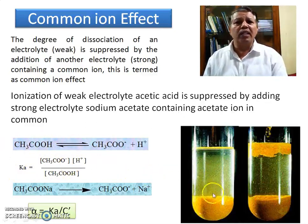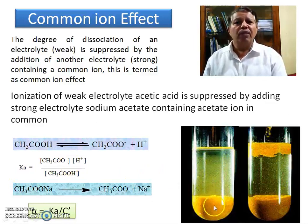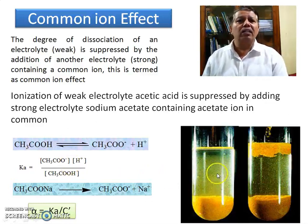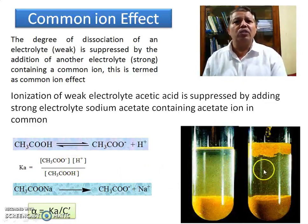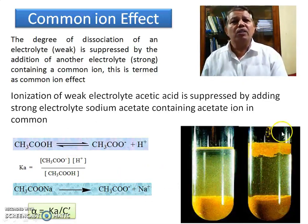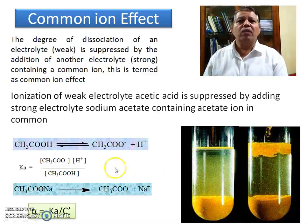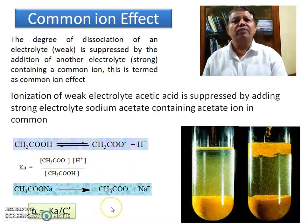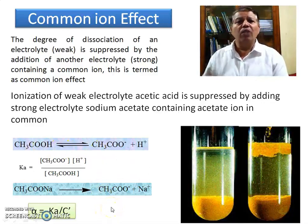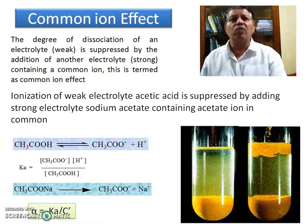For example, suppose we take a weak acid in saturated solution. If we add a small amount of acid, it immediately starts to re-precipitate because the backward reaction takes place. In this way, the degree of dissociation gets suppressed by the common ion effect.